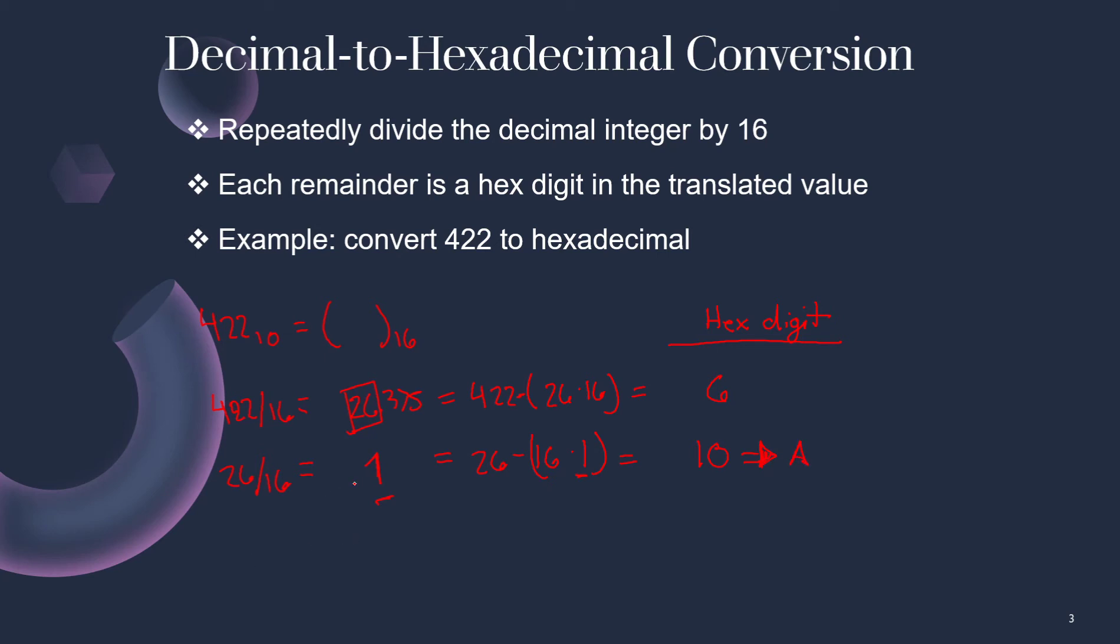So we are left with A. Then we are left with this one, comes over here. 1 divides 16. 16 does not go into 1, so it's 0. And we are left with a remainder of 1. So we read it upwards. So 422 in base 10 equals 1A6 in base 16.